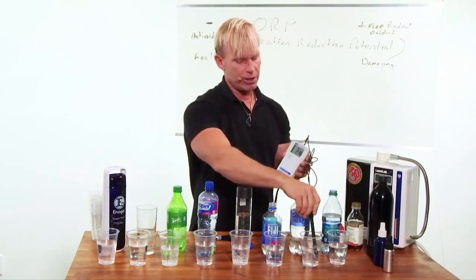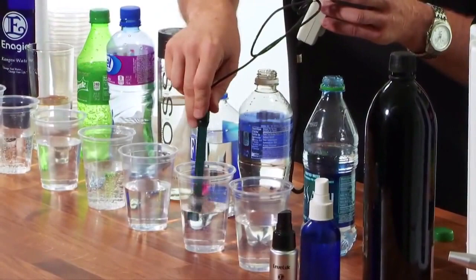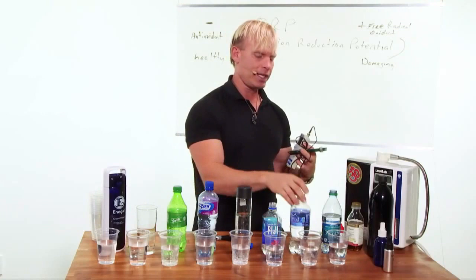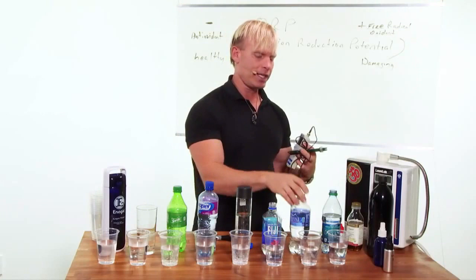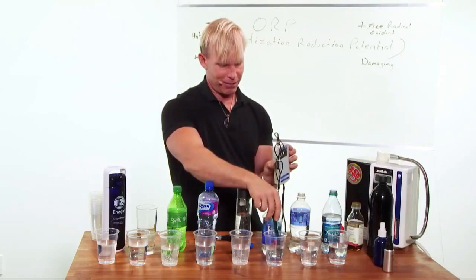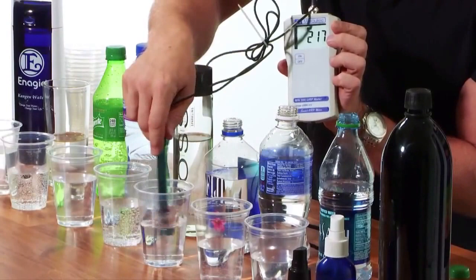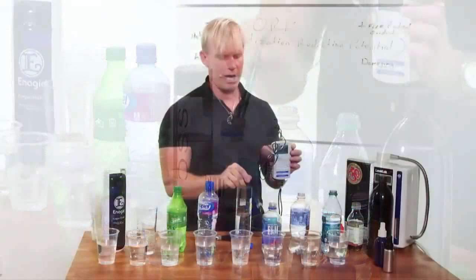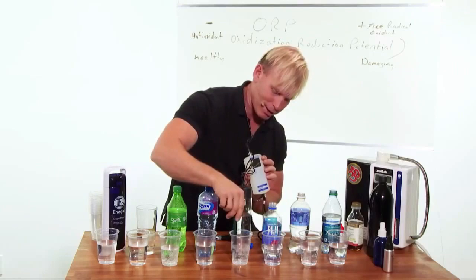So, let's look at Aquafina. And we got this one, it's a little bit higher, it's in the positive 270s. So, a little bit worse. Now, what's interesting is sometimes these will be different because of how long it's been storing in the sun. So, let's look at the Fiji bottle. What do we got there for a number? This is in the mid 200s, low 200s. So, again, positively charged. This is an oxidant, this is a free radical, this is doing damage.